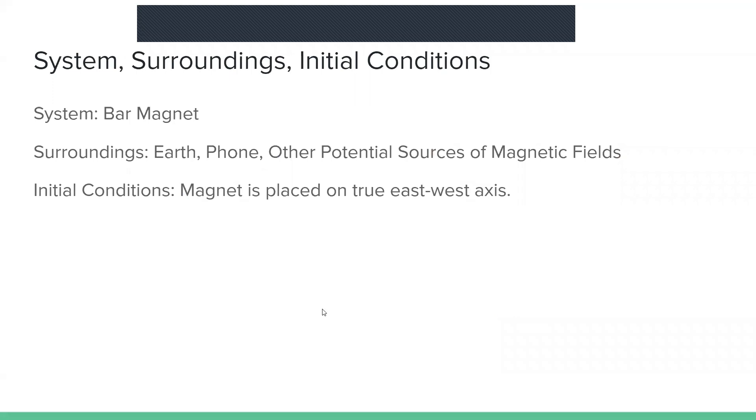The system's surroundings and initial conditions are as follows. The system is a bar magnet, the surroundings are the earth, the phone, and other sources of magnetic fields, and the initial conditions are that the magnet is placed on the true east-west axis.